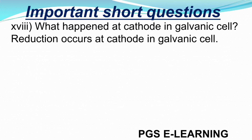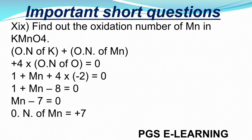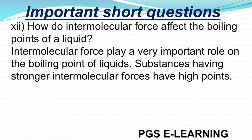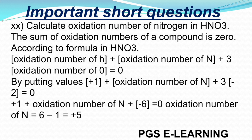Question 18: What happens at the cathode in a galvanic cell? Question 19: Find out the oxidation number of Mn in KMnO4. The solution is as follows. Question 20: Calculate the oxidation number of nitrogen in HNO3. The process is as follows. If you have any query, you can message.